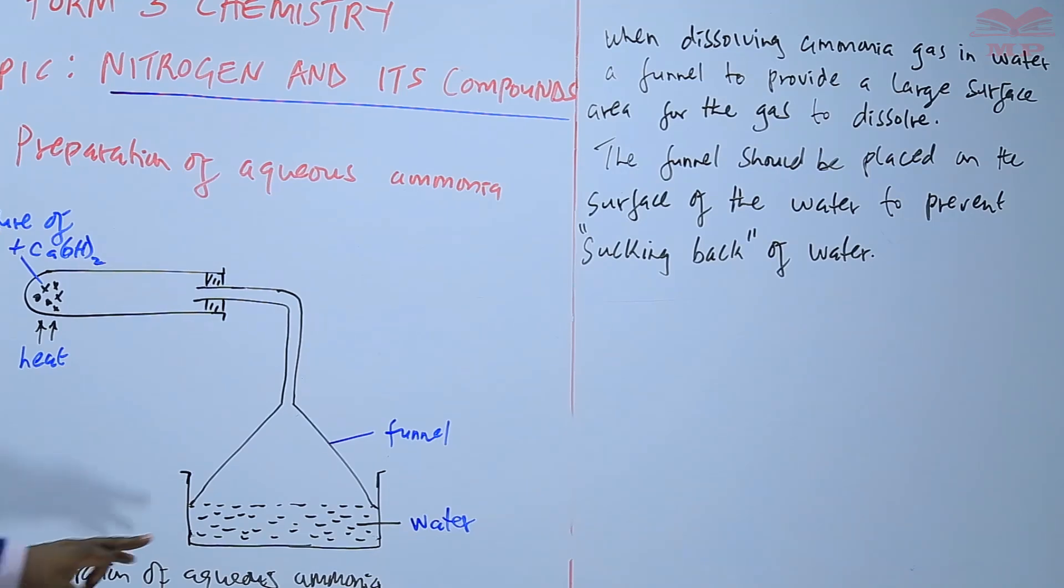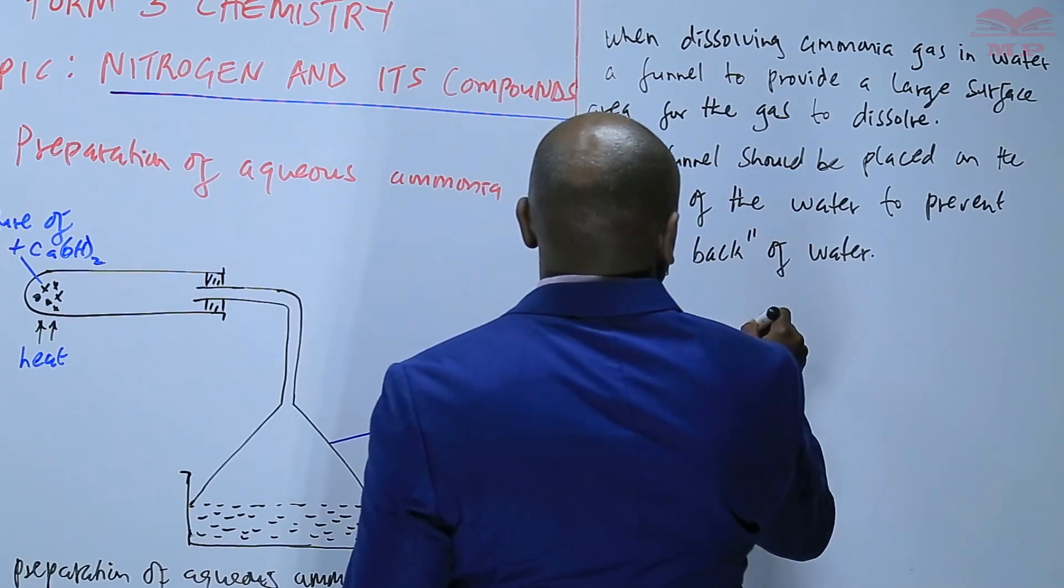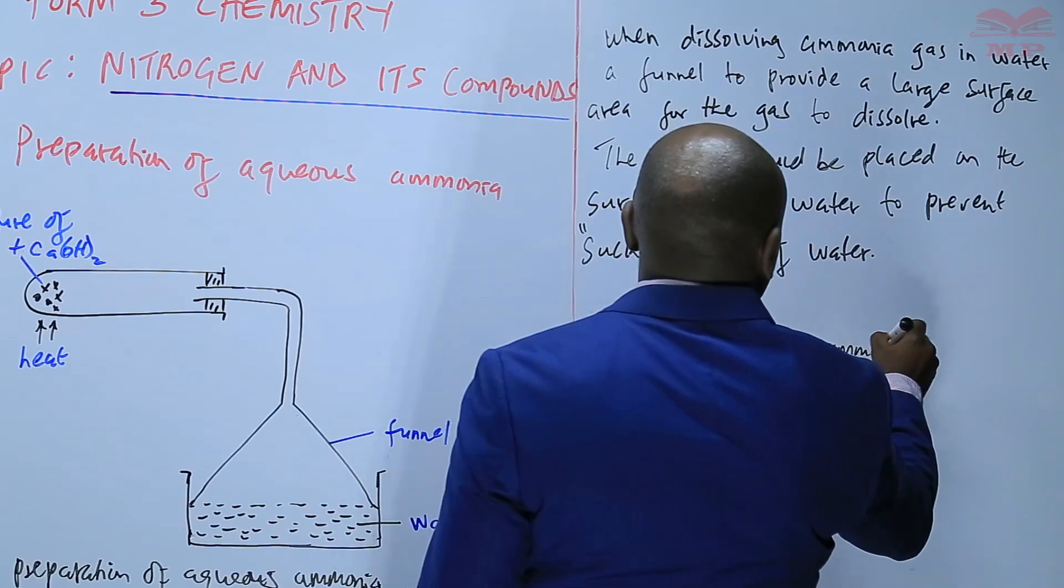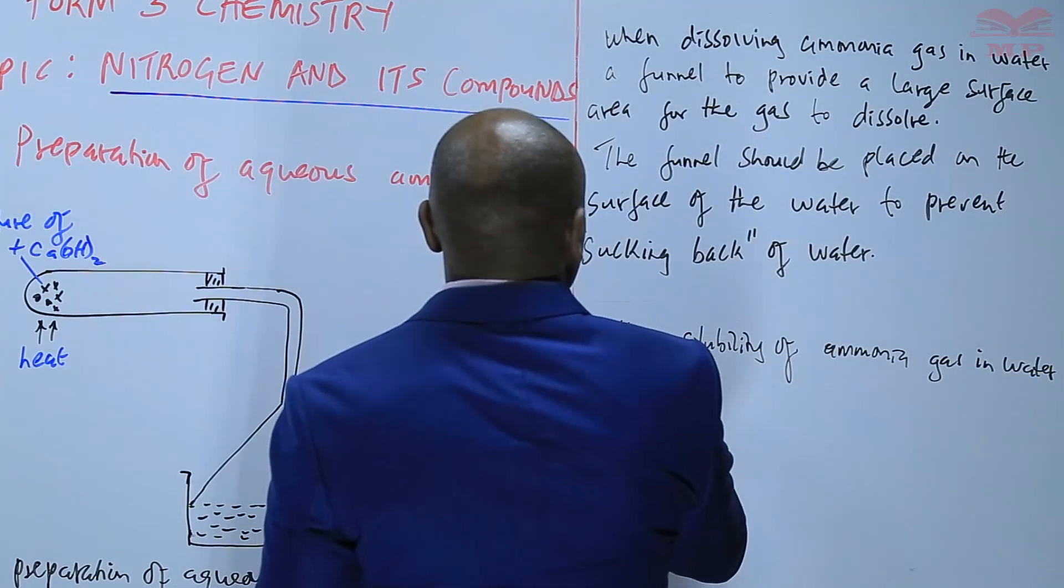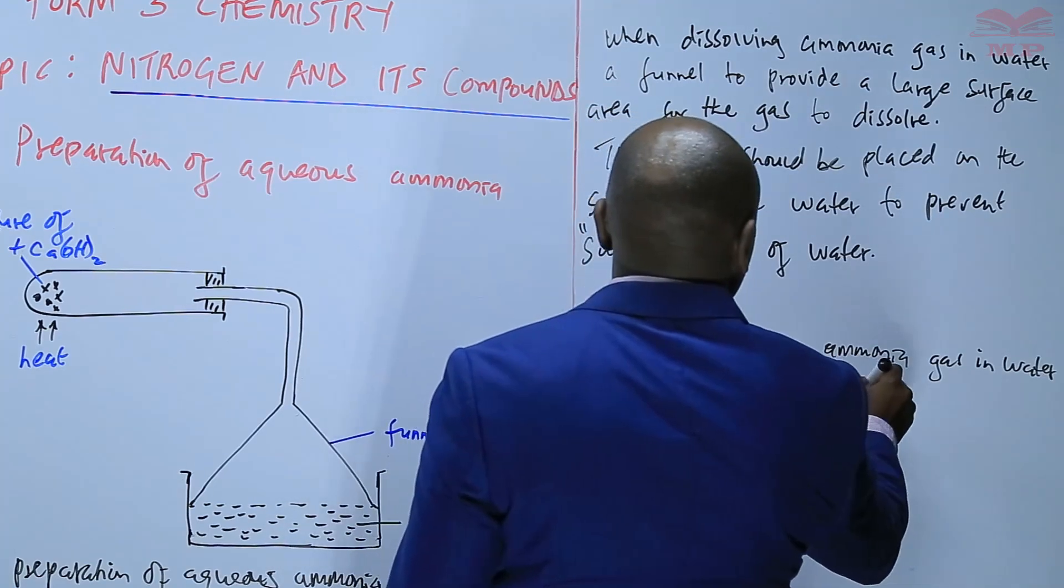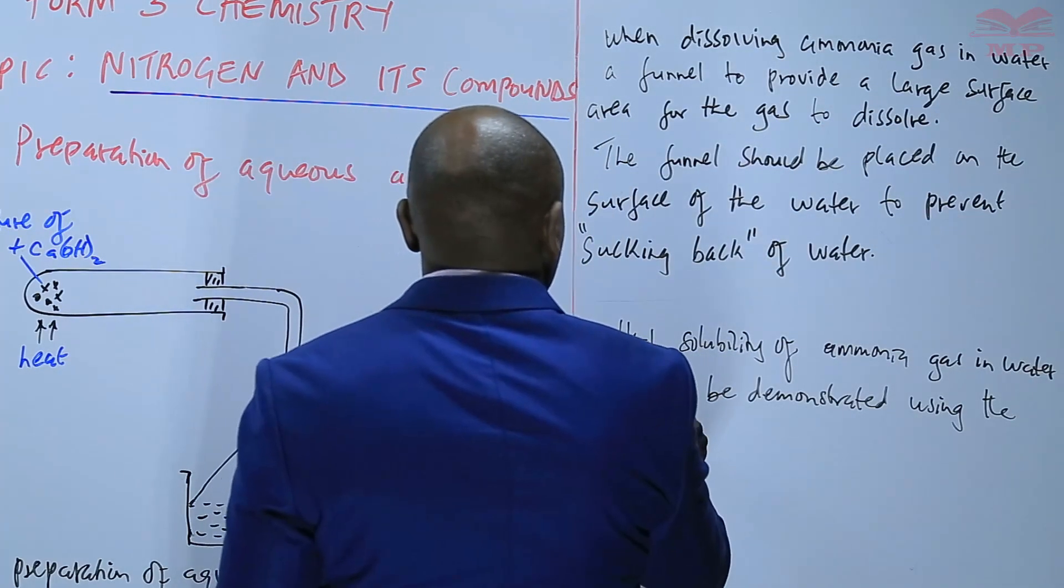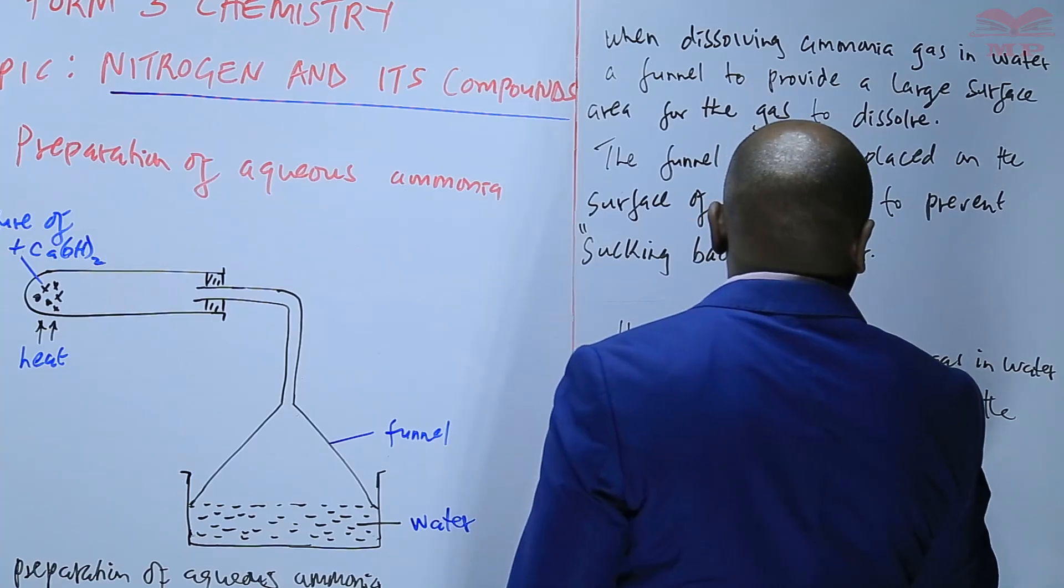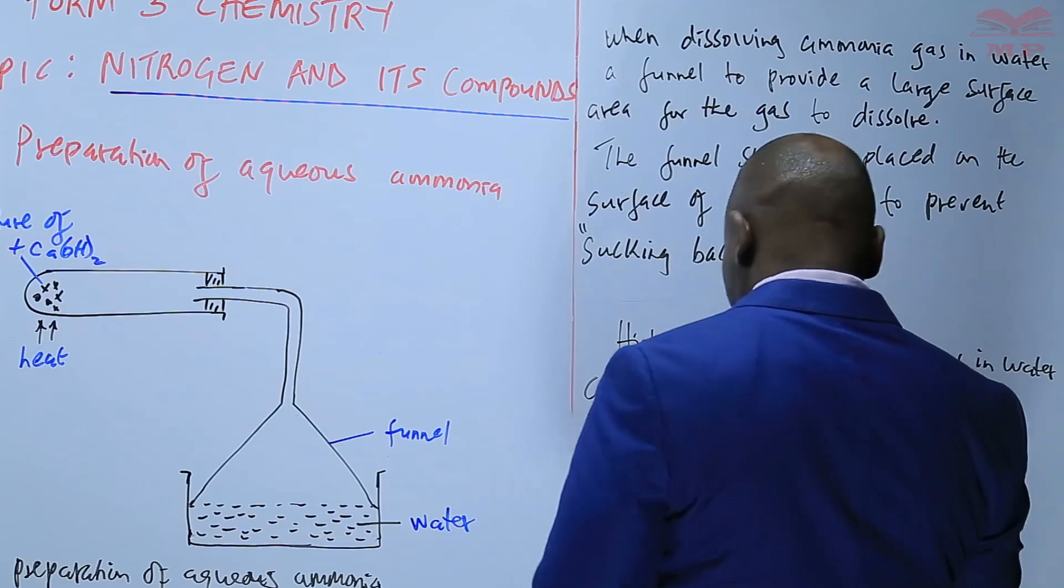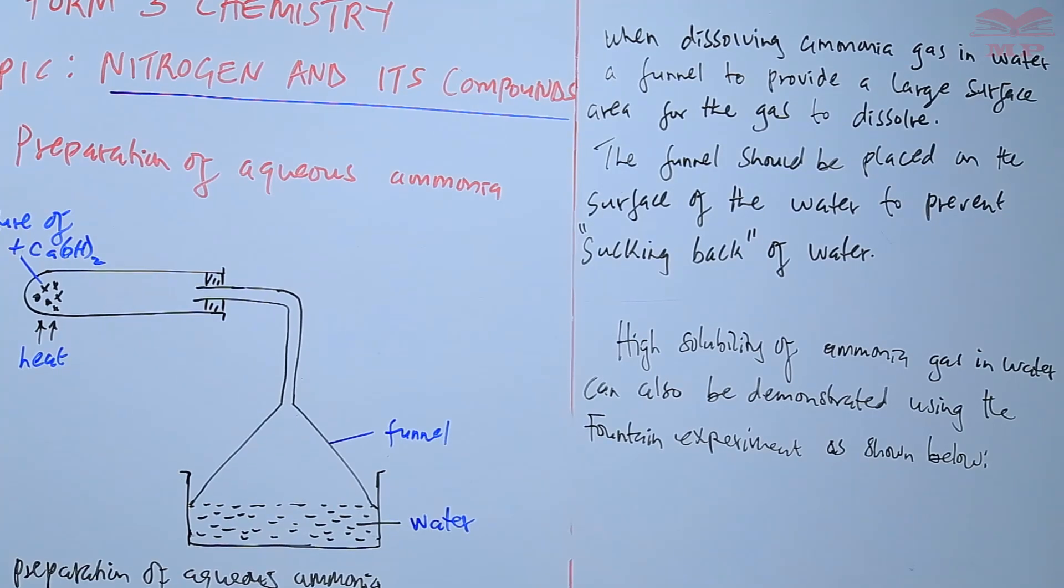So we can also say that the high solubility of ammonia can be demonstrated by use of what is called a fountain experiment. High solubility of ammonia gas can also be demonstrated using the fountain experiment as shown below. So we have the fountain experiment.